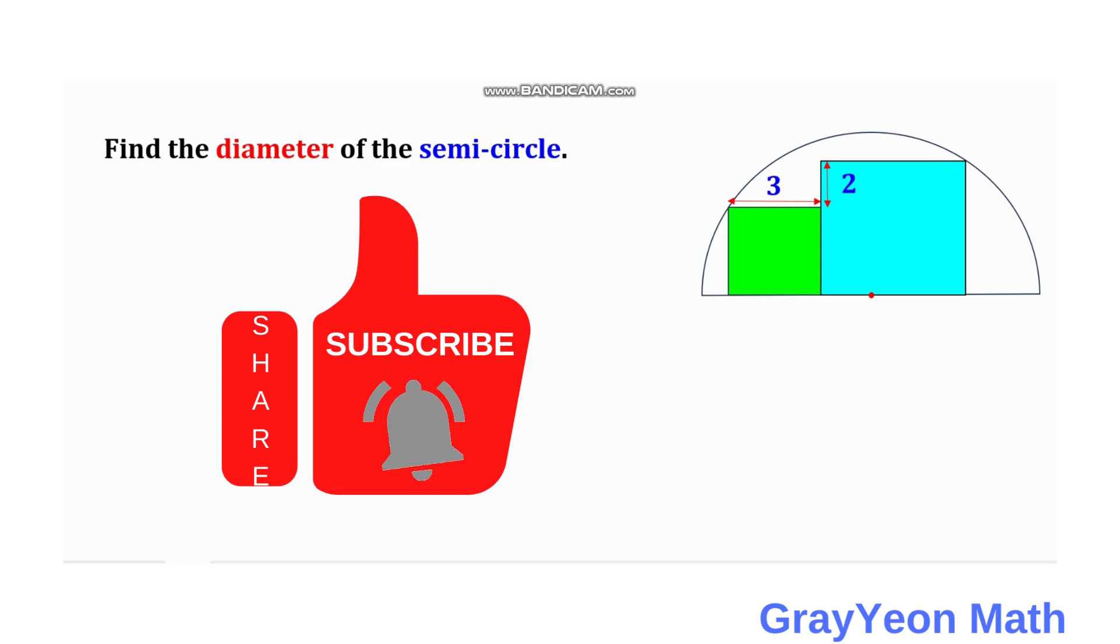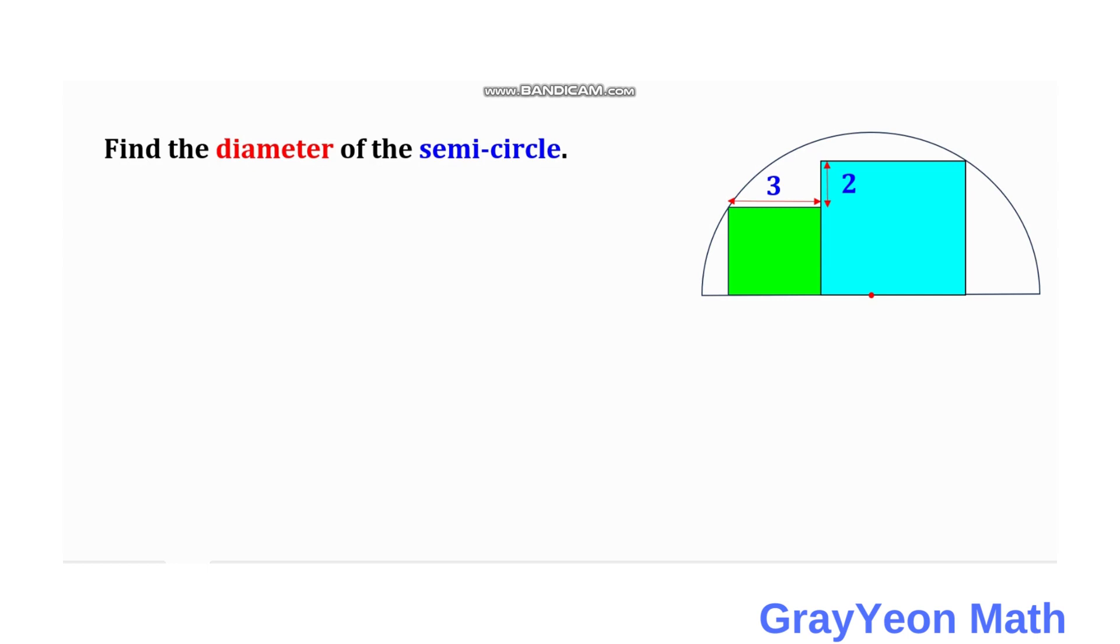And the side of the green square is 3. And the difference between the side of this blue and green square is 2 units. And we are required to find the diameter of this semicircle.